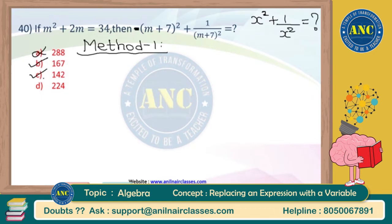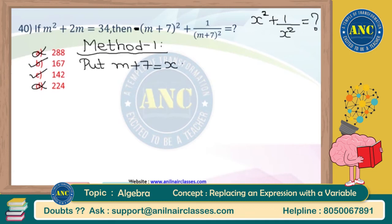Since two options remain, I move to Method 1. I let x = m + 7, so m = x - 7. The question becomes: find x² + 1/x². Substituting m = x - 7 into the equation m² + 2m = 34 gives (x - 7)² + 2(x - 7) = 34.